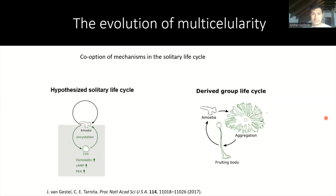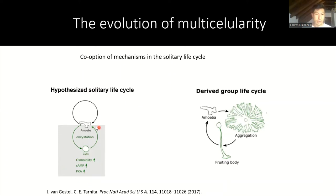As an example, we have the social amoeba Dictyostelium discoideum. The hypothesized life cycle shows a species that switches between two different stages: the feeding stage amoeba and the cyst. It seems that the molecular mechanisms used by these single-celled ancestors to switch between these two stages were co-opted in the social amoeba to switch between the solitary stage and the aggregation stage.